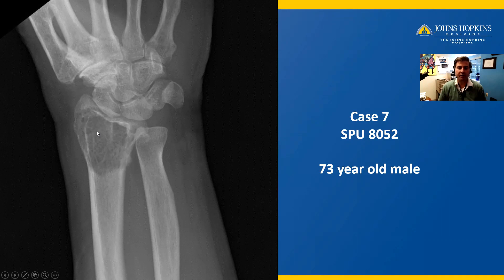There is no matrix formation. However, there are white lines corresponding to cystic changes. This patient is skeletally mature, as you can see — the nearby ulna growth plate has closed.